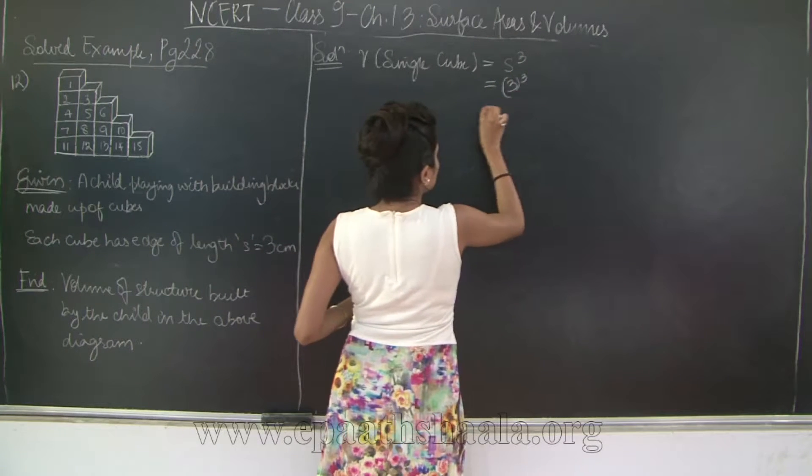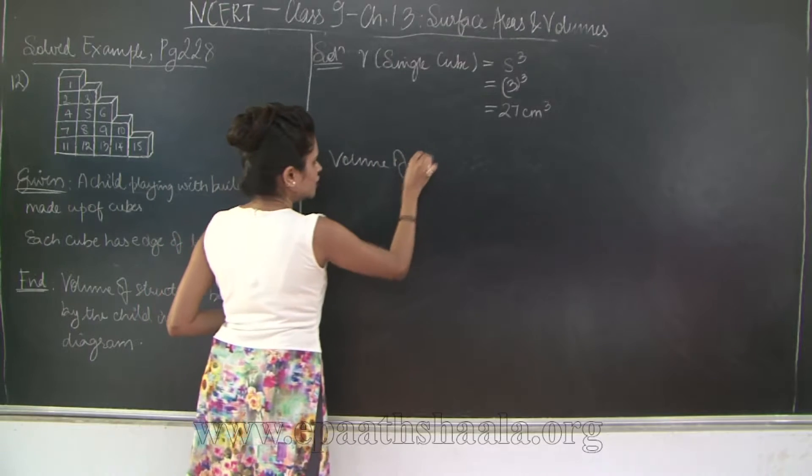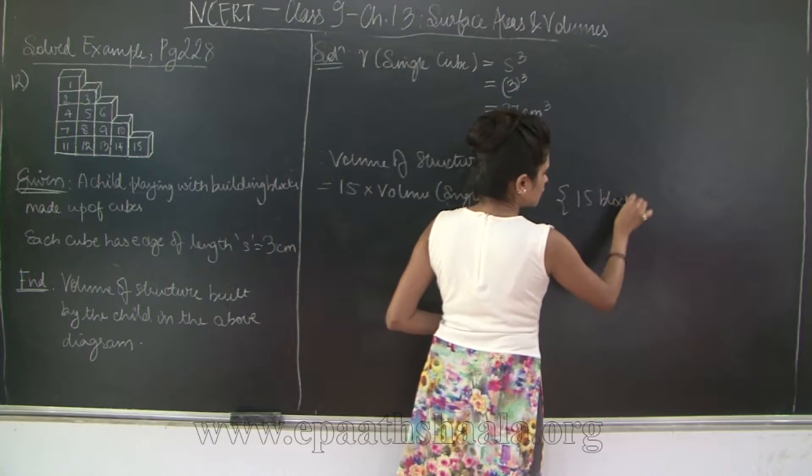I am going to say volume of single cube. We know that the volume of a cube is given by s cubed where s is the side, right? So, this is going to be 3 cubed which is 27 cm cubed. Therefore, volume of structure is equal to 15 into volume of single cube. I will say why, because 15 blocks are used, right?